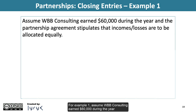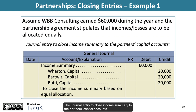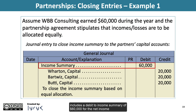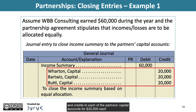For Example 1, assume WBB Consulting earns $60,000 during the year and the partnership agreement stipulates that incomes or losses are to be allocated equally. The journal entry to close income summary to the partners' capital accounts includes a debit to income summary of $60,000 and credits to each of the partners' capital accounts for $20,000 each, since the income is to be allocated equally among the partners.